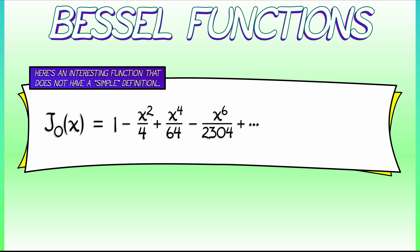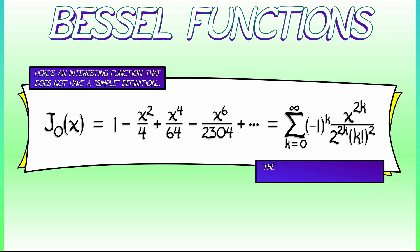J-naught can be expressed as the sum from k equals 0 to infinity of negative 1 to the k, x to the 2k, divided by 2 to the 2k times k factorial squared. Where did that come from? That's really the definition of this Bessel function.